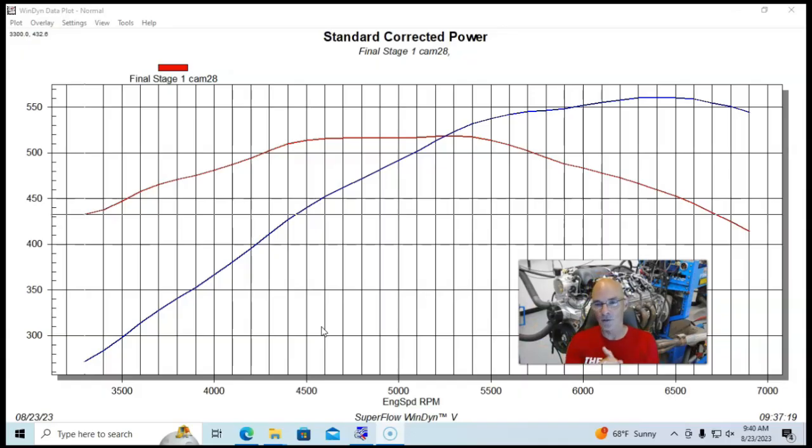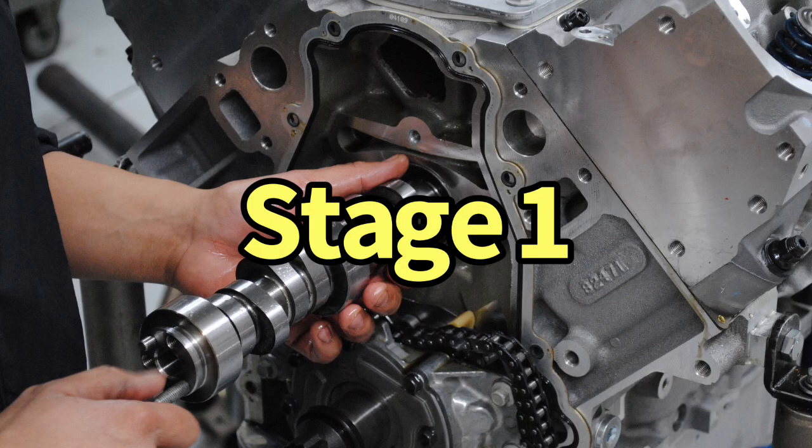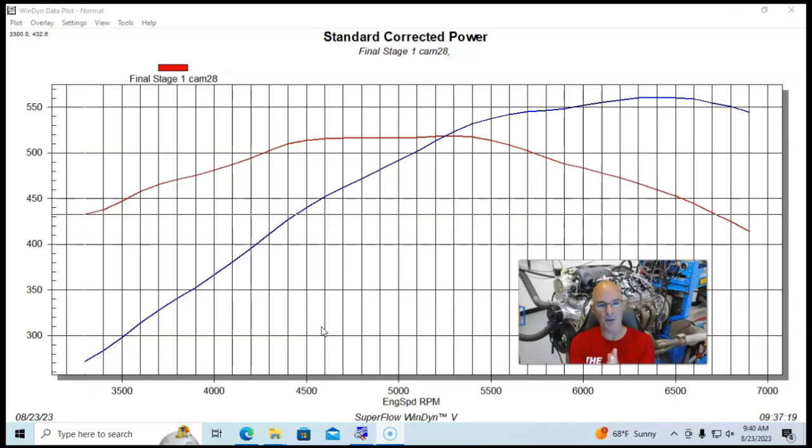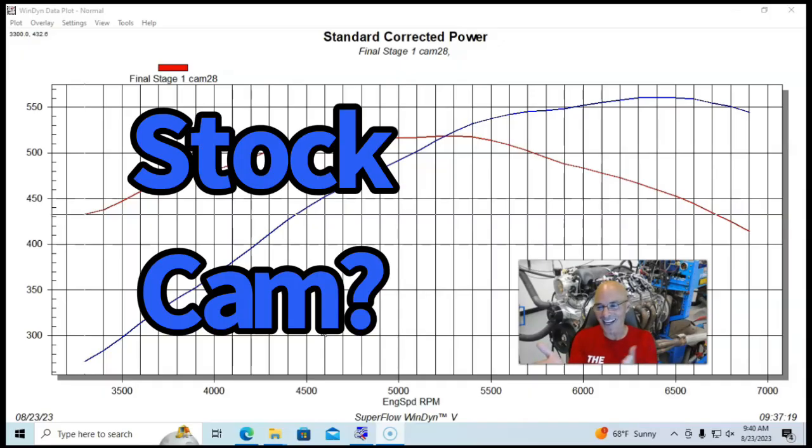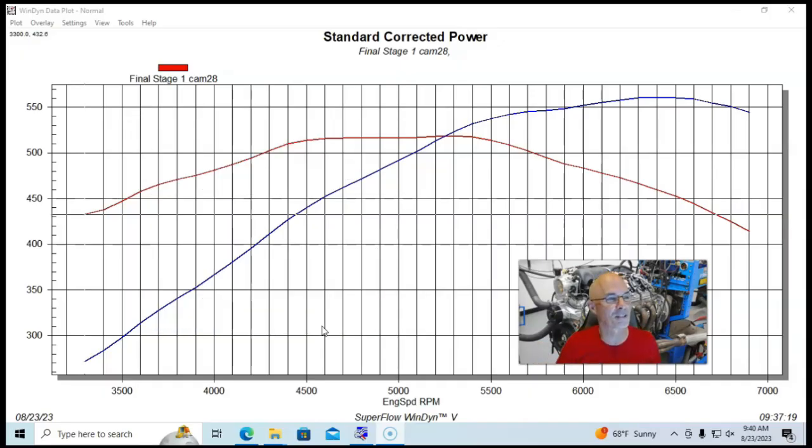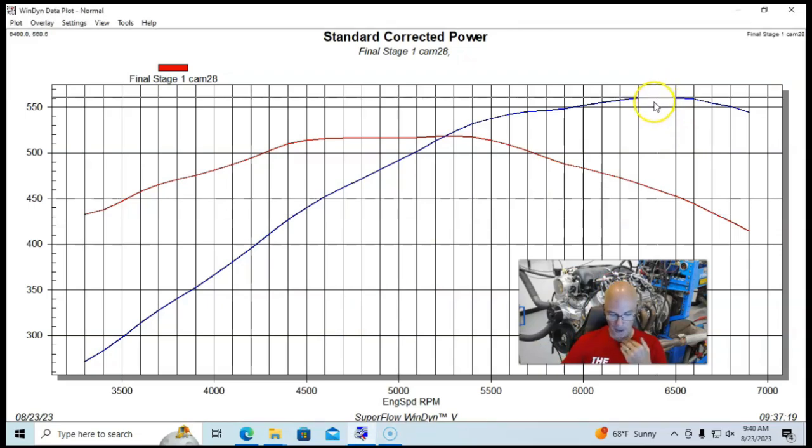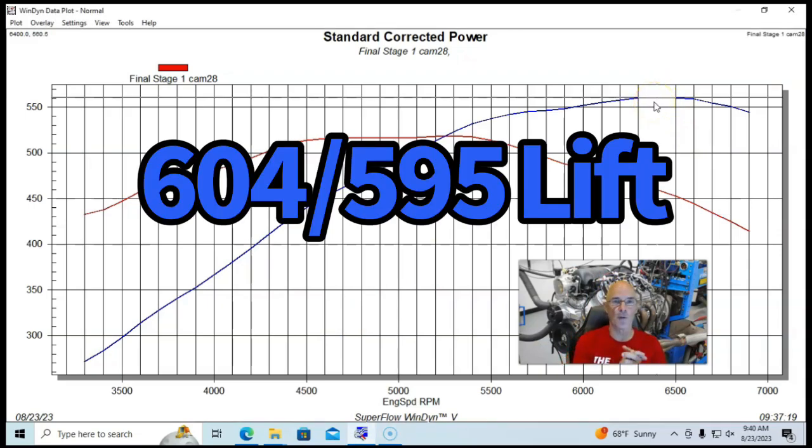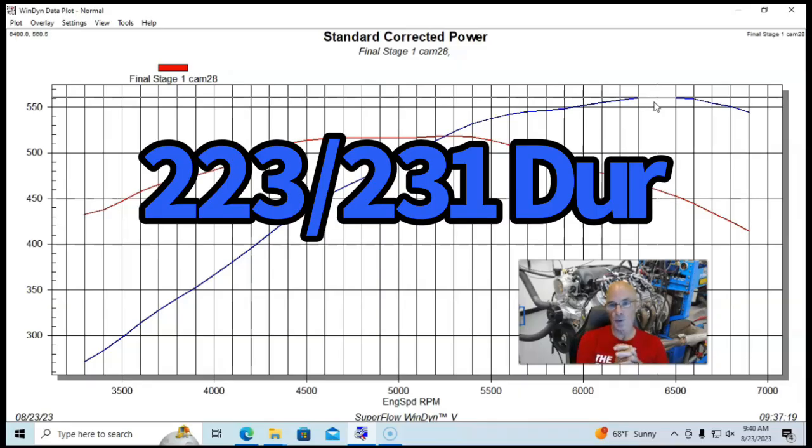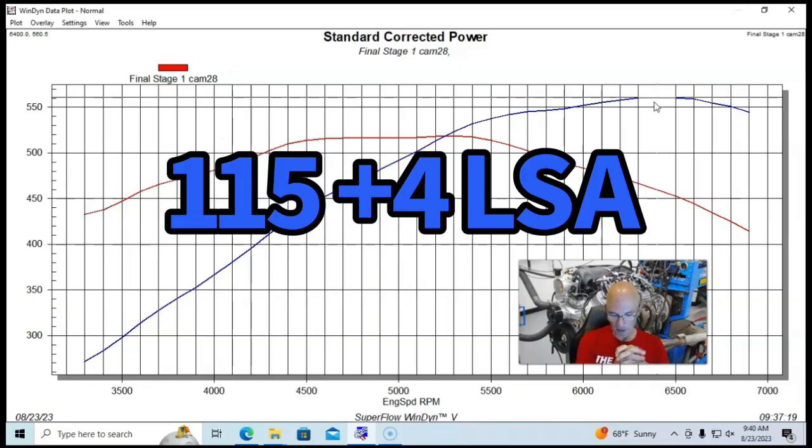We're going to start off with our stage one cam from Airflow Research. And you might notice, hey Richard, there is no baseline. Where is the one with the stock cam? And here's where you're going to get to make your comments. Run with the Airflow Research stage one cam, the stage one cam was a 604, 595 lift, 223, 231 degree duration and 115 degree LSA plus four.